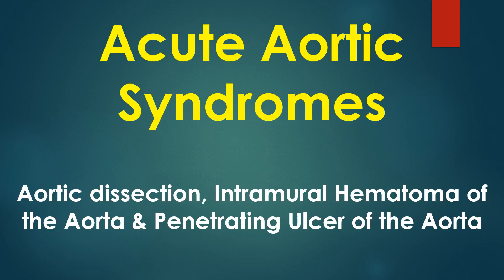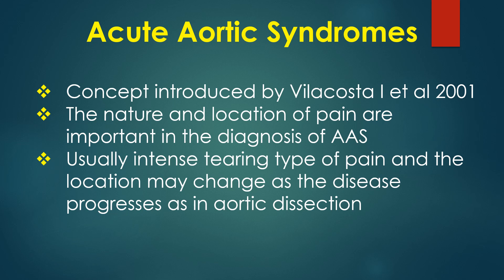Acute aortic syndromes include aortic dissection, aortic intramural hematoma and penetrating ulcer of the aorta. They are an important differential diagnosis of acute coronary syndrome. The concept of acute aortic syndrome was introduced by Villa Costa and colleagues in an editorial published in Heart in 2001.